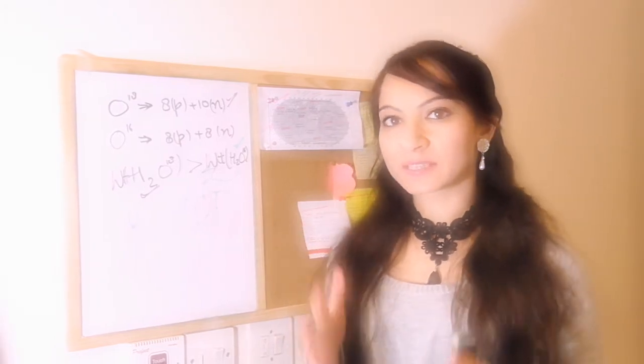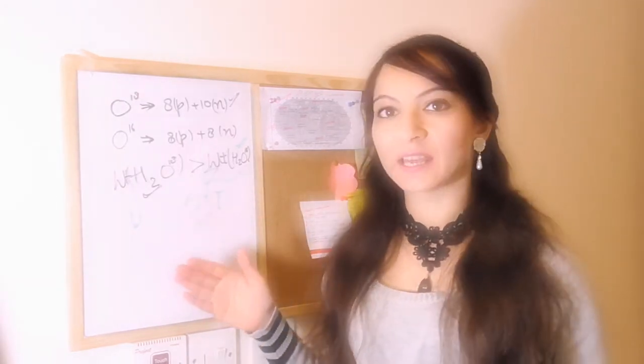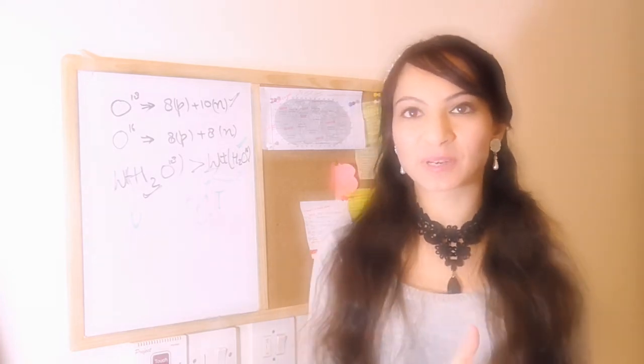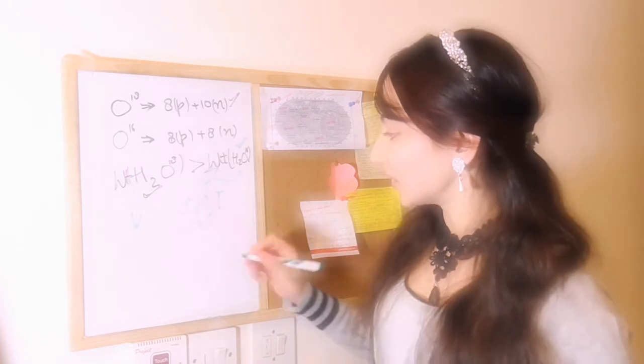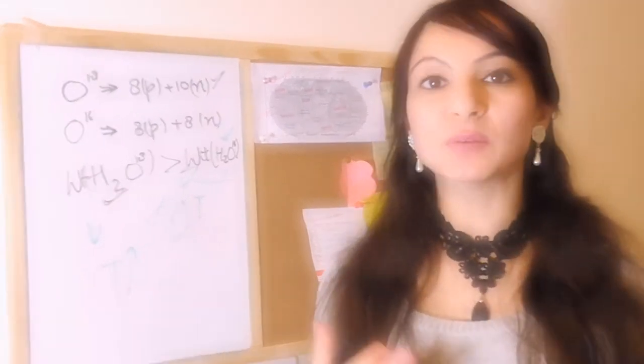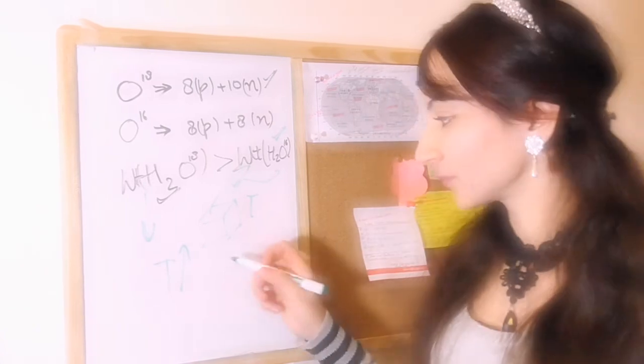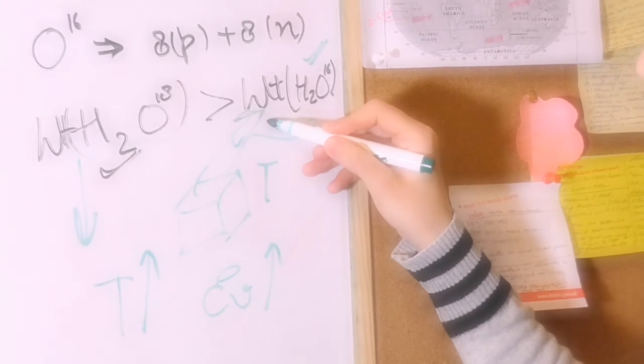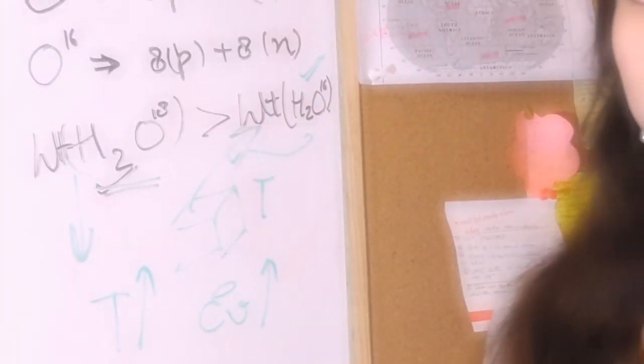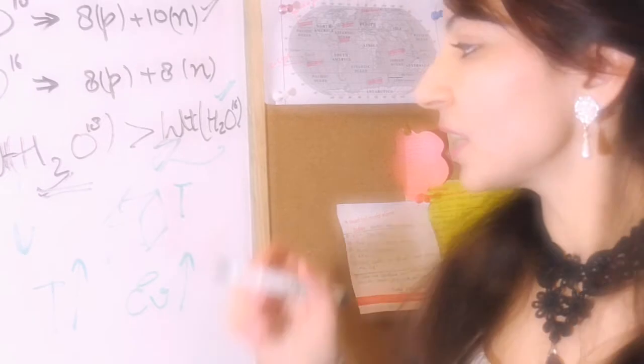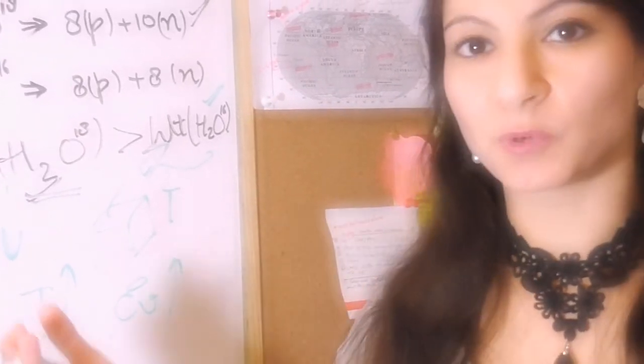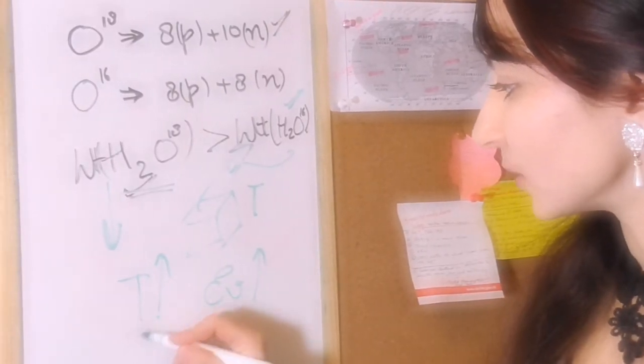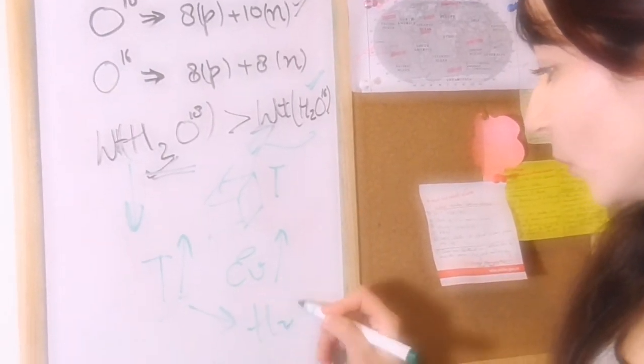So why we take it as a measure of temperature? Because if there is higher temperature, there will be more evaporation. Evaporation will be higher, and content of H2O-18 in sea would be higher because H2O-16 will evaporate. Right? So there is a direct link between temperature and H2O-18 molecules. Higher is the temperature, or higher is the sea surface temperature, higher would be the H2O-18 value.